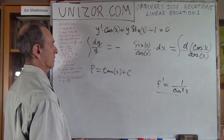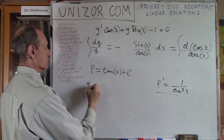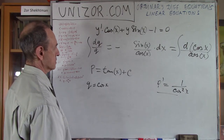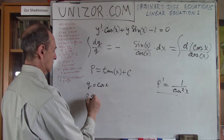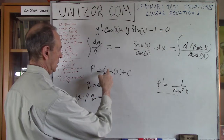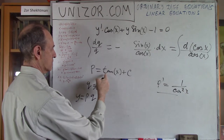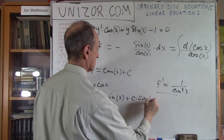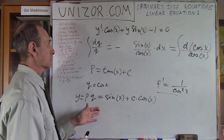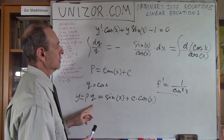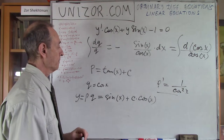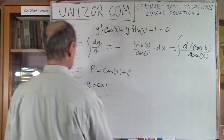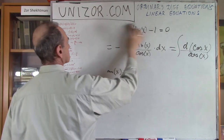And q was cosine of x. So y = p·q equals tan(x)·cos(x) + C·cos(x). Since tangent is sine over cosine, tangent times cosine equals sine of x. So y = sin(x) + C·cos(x), where C is any constant. Again, you can check it, and I did check it on unizor.com, and I suggest you do it yourself first. Whenever you are solving differential equations or any kind of equations, checking is a must — always.